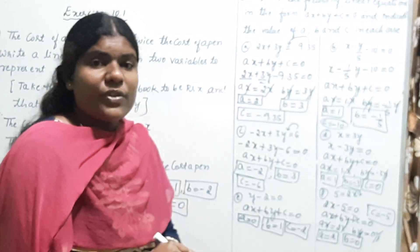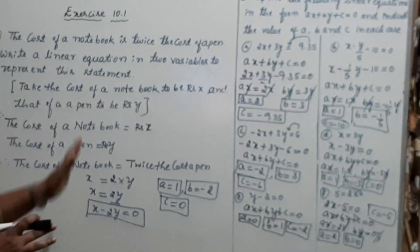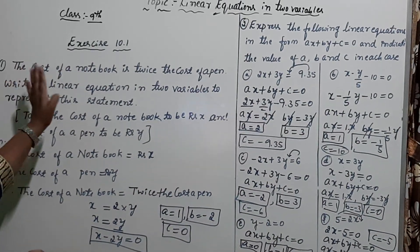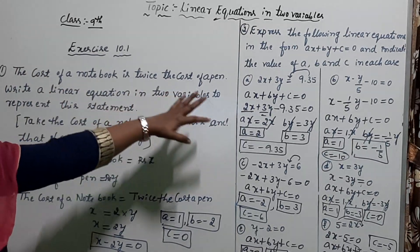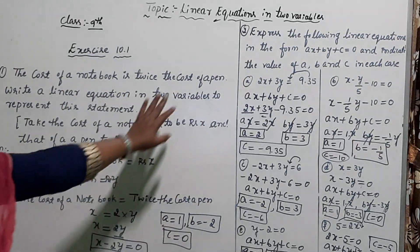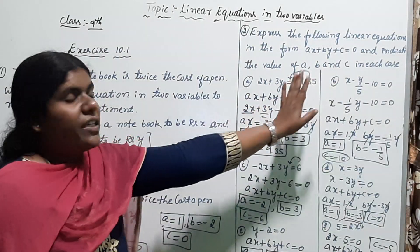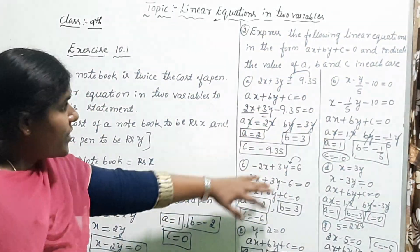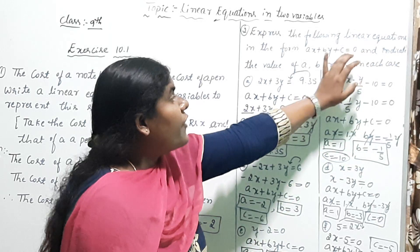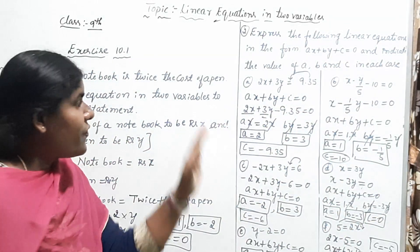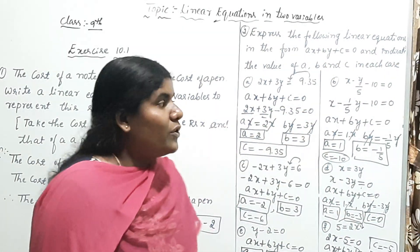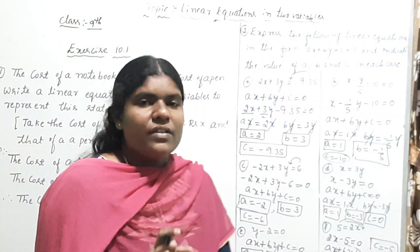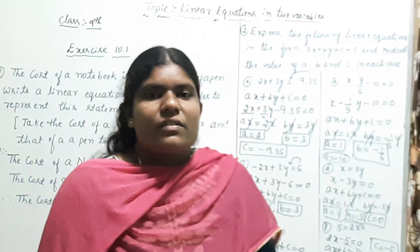To repeat once again what we learned in this class: Exercise 10.1, the first problem on the cost of a notebook and pen, and the second question — express linear equations in standard form and find the values of A, B, and C one by one. I hope all of you understood. Thank you.